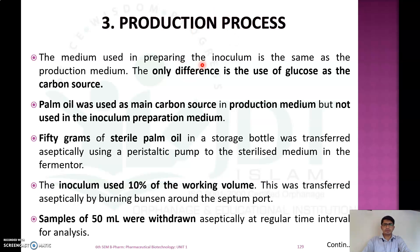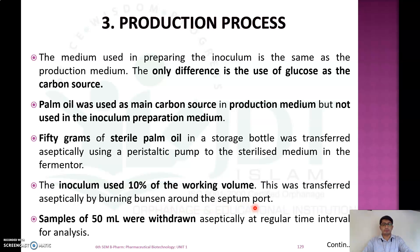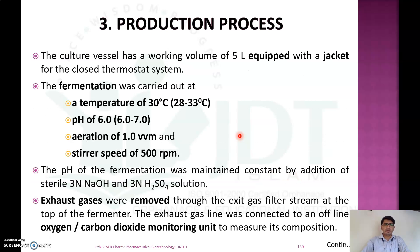In the production process, the inoculation media is the same as the production media except palm oil is used as the carbon source in the production media instead of glucose. Usually 50 g of sterile palm oil from a storage bottle is transferred aseptically using a peristaltic pump to sterilized medium in the fermenter. The inoculum volume is 10% of the working volume, transferred aseptically by Bunsen-flaming around the septum port. Samples of 50 mL are withdrawn aseptically at regular time intervals for analysis.